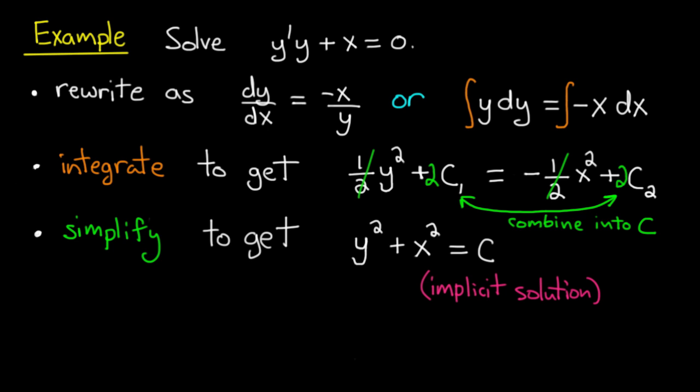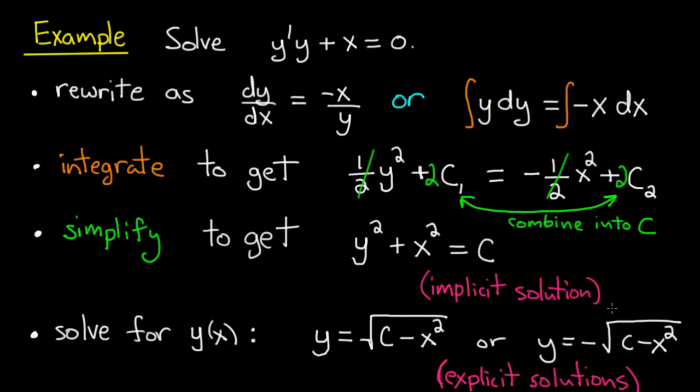Now I could solve and get an explicit solution. So let's do that. So if I solve for y as a function of x, subtract x squared from both sides, and I get y squared equals c minus x squared. Now I can take the square root, but there's two square roots I could take. y equals square root of c minus x squared. That's the top half of the circle. Or y equals minus square root of c minus x squared. That's the bottom half of the circle. So these are the explicit solutions.